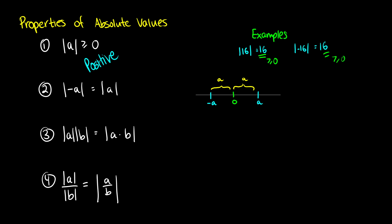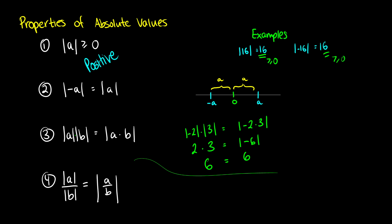If we have to multiply absolute values together — the absolute value of a multiplied by the absolute value of b — this is the same thing as the absolute value of a times b. You can just do the absolute value calculation once at the end. For example, the absolute value of negative 2 times the absolute value of 3 is the same as 2 times 3, which equals 6. Alternatively, we can take the absolute value of negative 2 times 3 all at once: the absolute value of negative 6, which outputs 6. Either way, you get the same result, so pick whichever is easier.